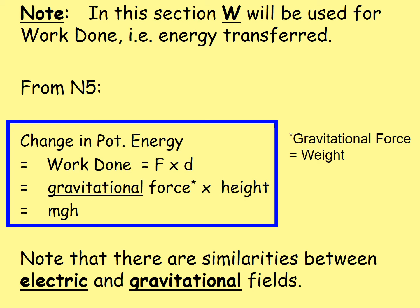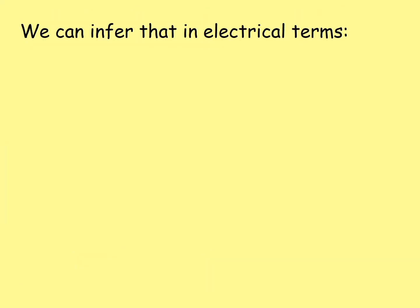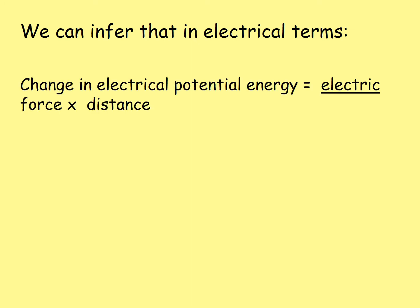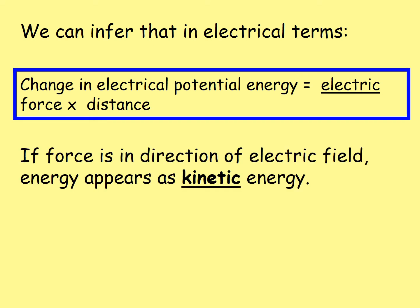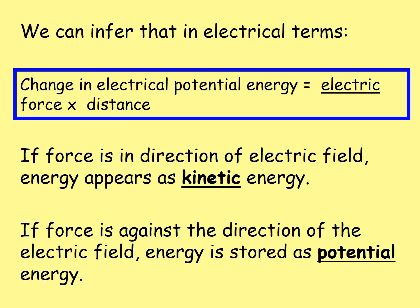Note that there are similarities between electric and gravitational fields. In electrical terms, the change in electrical potential energy equals the electric force multiplied by the distance. If the force is in the direction of the electric field — from positive to negative — the energy appears as kinetic energy, which is the principle used in particle accelerators. If the force is against the direction of the electric field, energy is stored as potential energy. This is analogous to a gravitational field: a dropped mass gains kinetic energy as it falls, but work must be done to move it back up, storing gravitational potential energy, which converts back to kinetic energy when dropped.